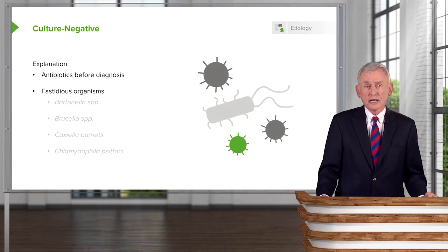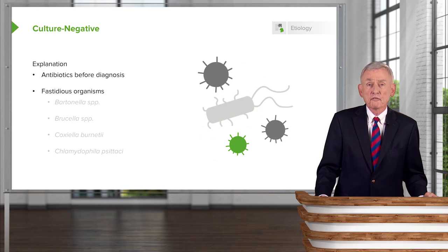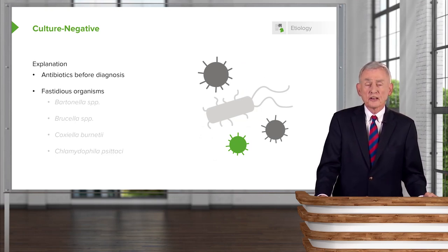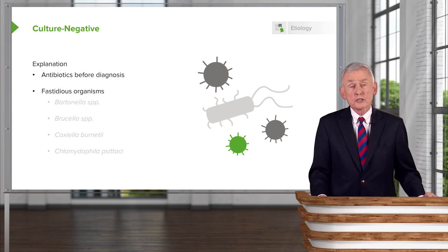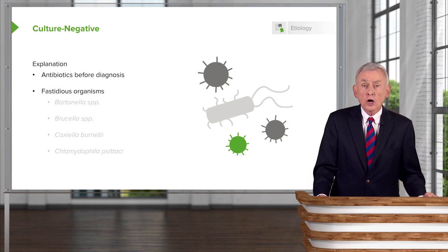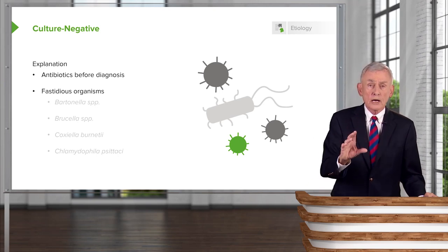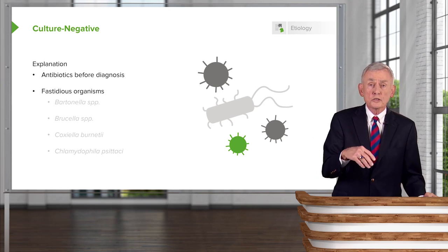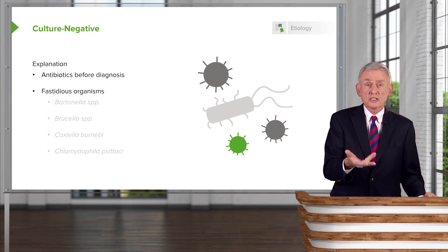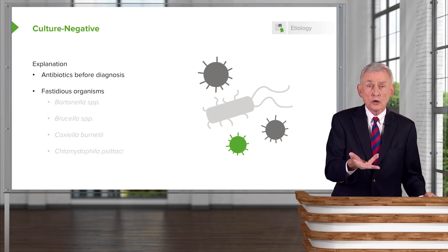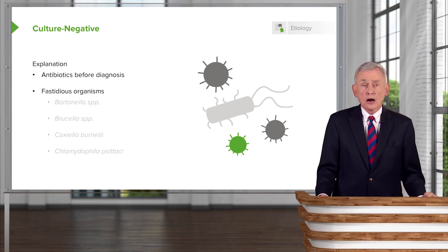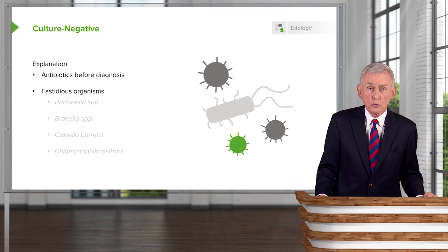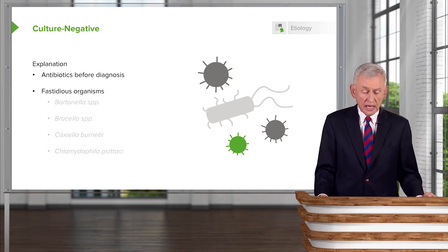The other explanation for culture-negative endocarditis is fastidious organisms — organisms that don't grow easily in the microbiology lab, some taking weeks. If you suspect one of those organisms, call the microbiology lab and say you're worried about a slow-growing organism and ask them to hold the blood cultures for the next several weeks. Blood cultures after seven days in routine microbiology labs are discarded and called negative.